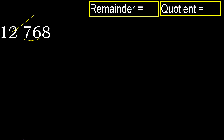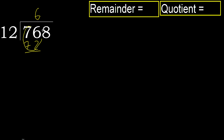12 multiplied by 7 is greater. Multiplied by 6: 72 is not greater. Subtract: 76 minus 72 is 4. Next.